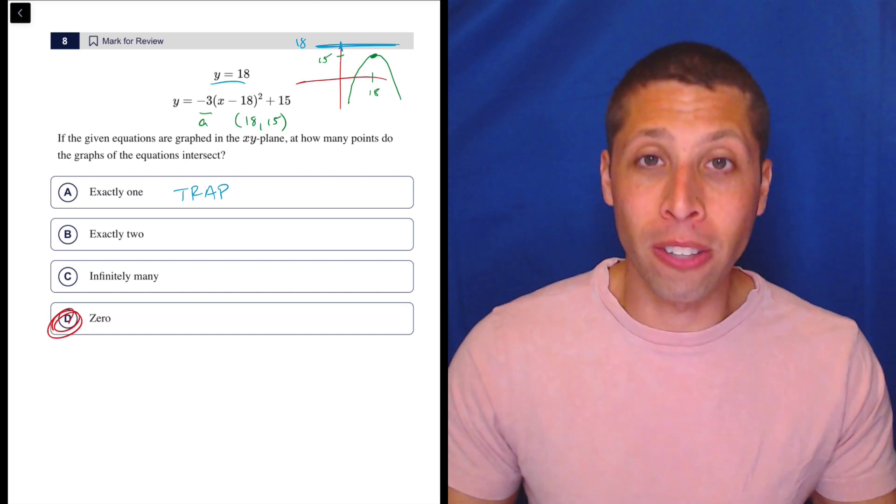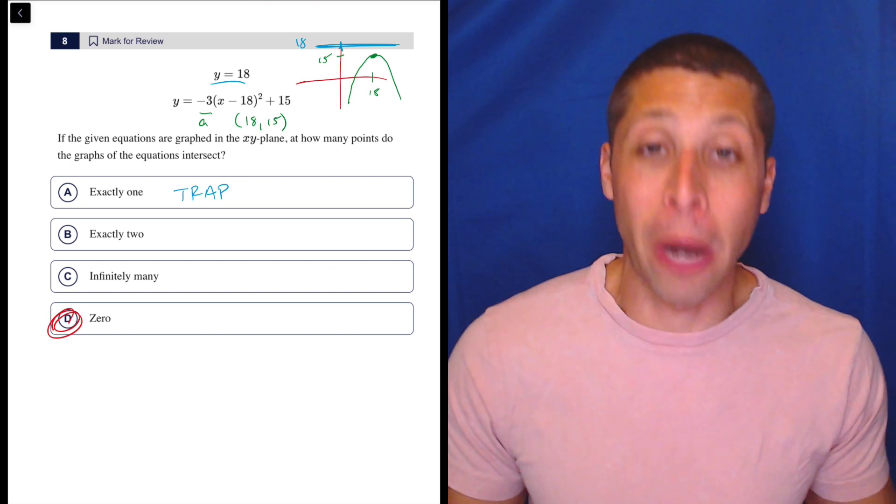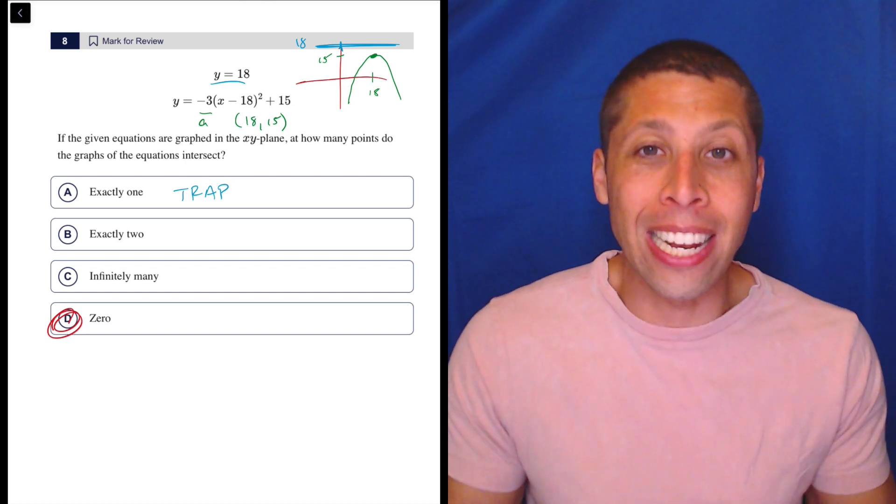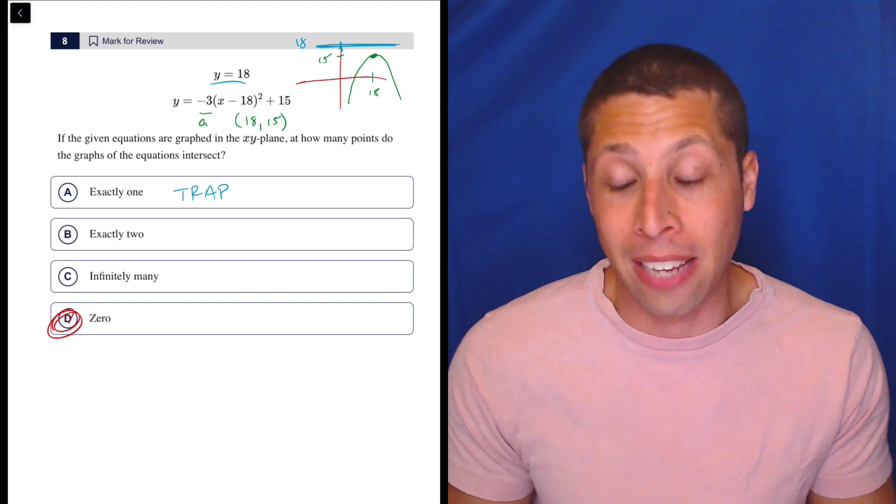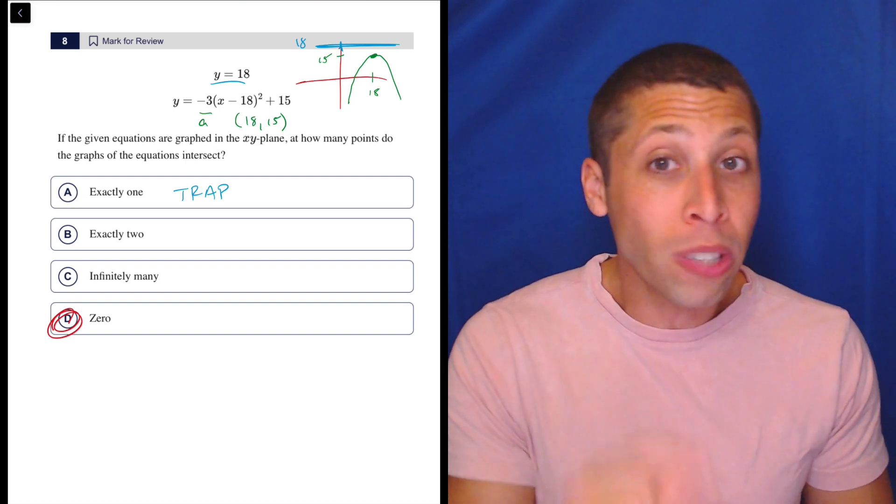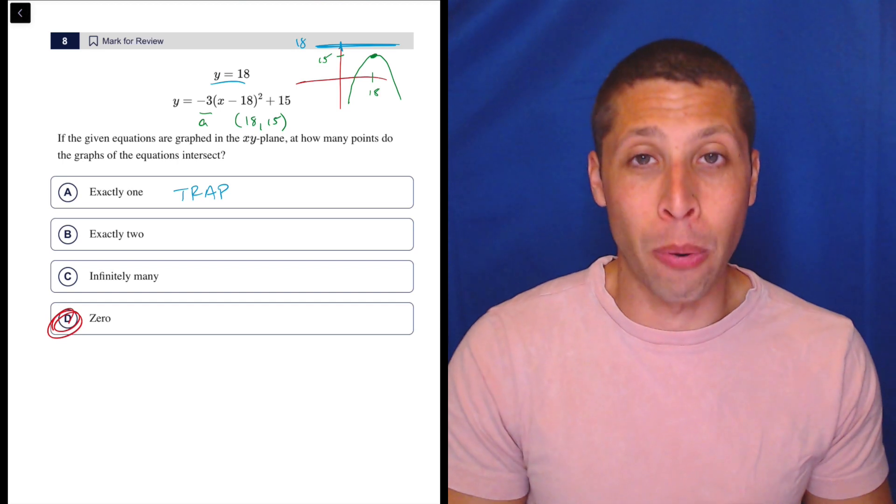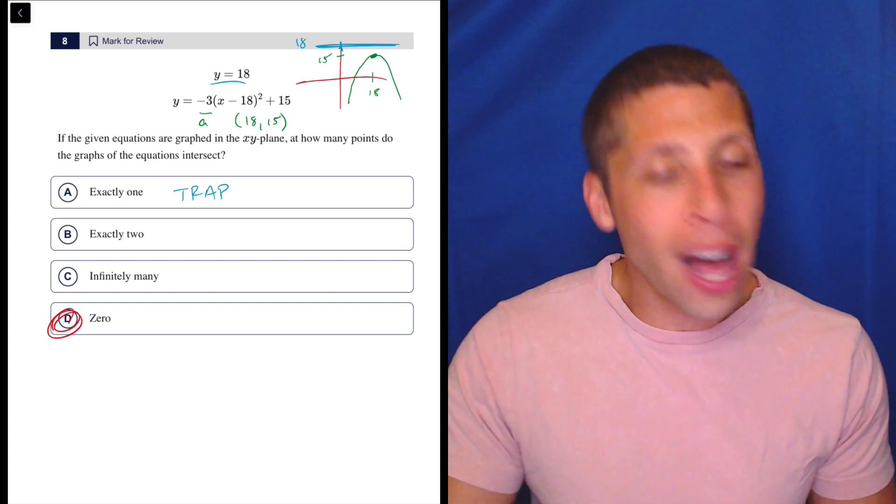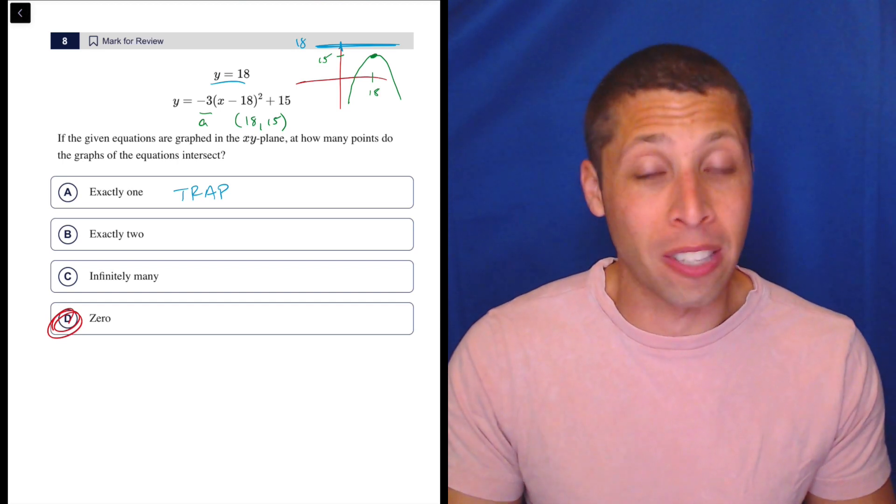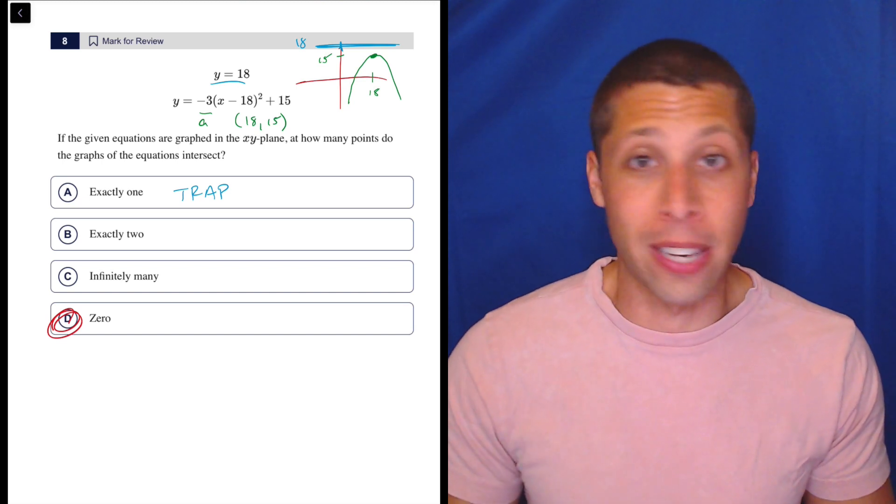You cannot default to this conceptual, abstract, algebraic way of thinking. Go to the calculator. Just let it save you from these careless mistakes because it may take a few seconds longer to enter that equation, but it is worth it to save those 10 points. You want to lock in everything that you can on these hard modules. That's going to be easy. This is easy if you just put it in Desmos.